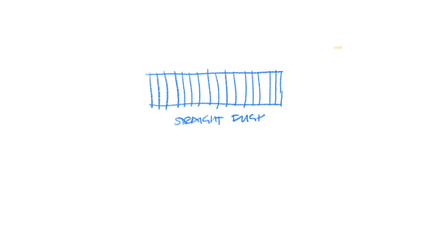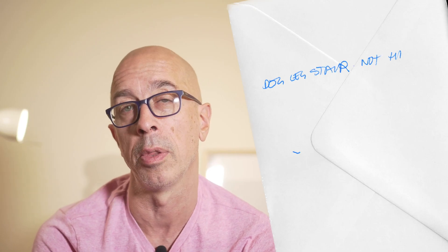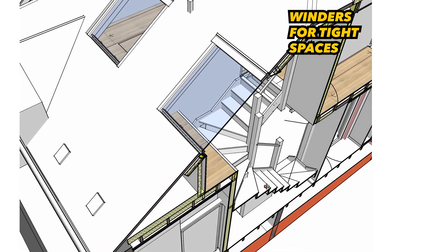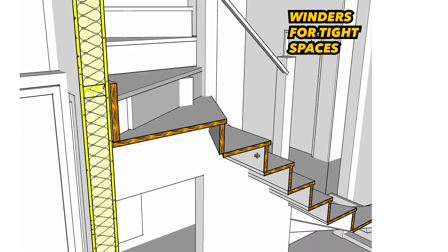The first is a dog leg where you have a half landing and you turn around 180 degrees, and then there's a straight flight. The straight flight is slightly cheaper and I will usually allow around this much for a dog leg. You can also consider winders on the landing if headroom is an issue.